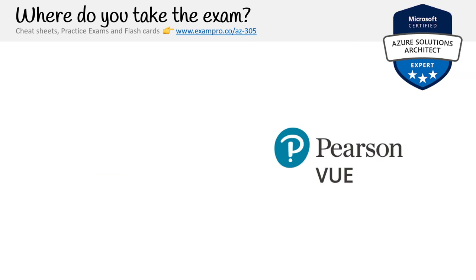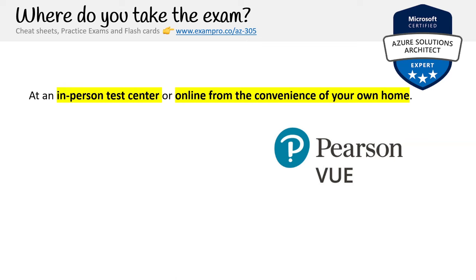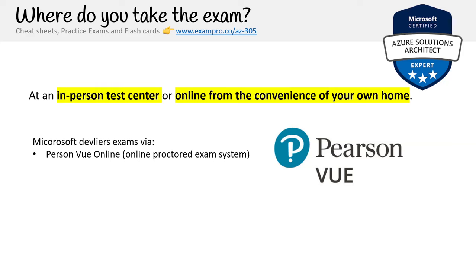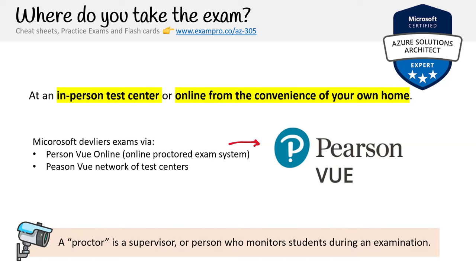You're going to take this exam with Pearson Vue. Previously Microsoft offered it through PSI online, but now it's just Pearson Vue. You can do it at an in-person test center or online from your home. This is the Pearson Vue online proctored exam system, and the Pearson Vue network of test centers is where you do it in person. The word "proctor" means a supervisor — someone is going to monitor you during this exam. Sometimes online they will actually call and talk to you and ask you to show the room.